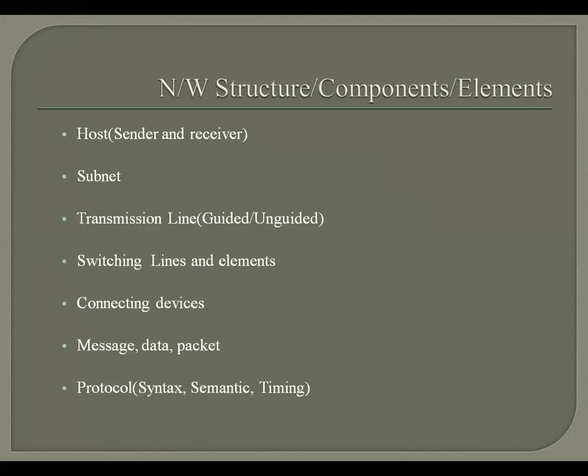The next element is the transmission line — the physical connection, which can be guided or unguided, such as coaxial cables, fiber optic cables, etc. There are also switching lines and elements. Then there are connecting devices such as repeaters, switches, routers, and gateways — these are very much required, as without connecting devices no one can communicate. The next element is the message, data, and packet — what is actually being sent. The last and very important element is the protocol. Without a protocol, we cannot communicate. A protocol comprises three terms: syntax, semantics, and timing. Syntax refers to the format and structure; semantics refers to the meaning; and timing refers to when the message is supposed to be sent from source to destination.